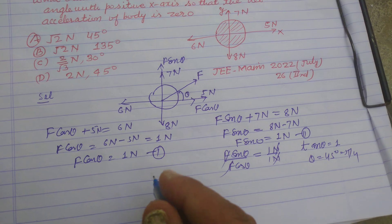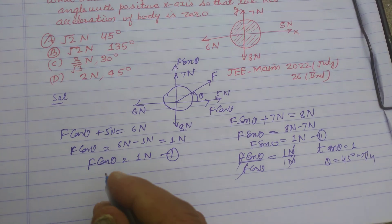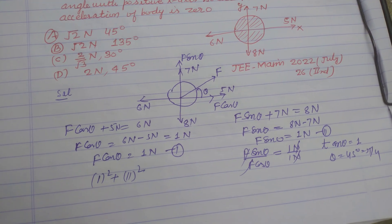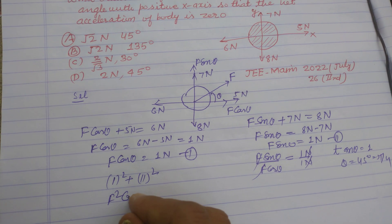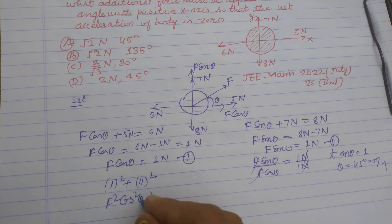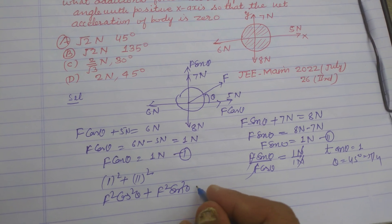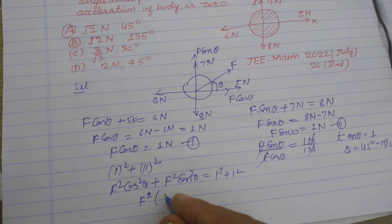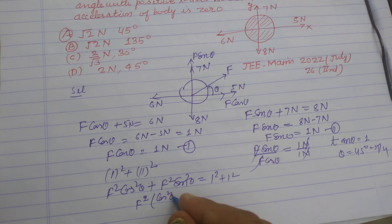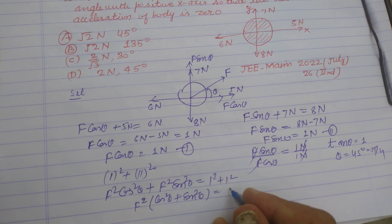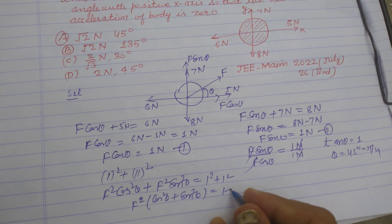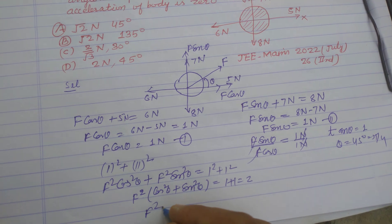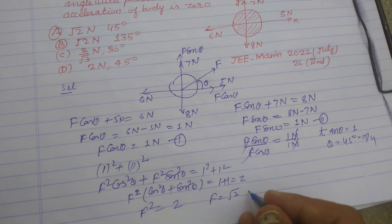To find the value of F, we square both equations and add them. F squared cos squared theta plus F squared sin squared theta equals 1 squared plus 1 squared. Taking F squared as common: F squared times (cos squared theta plus sin squared theta) equals 2. Since cos squared theta plus sin squared theta equals 1, we get F squared equals 2, so F equals root 2 newton.